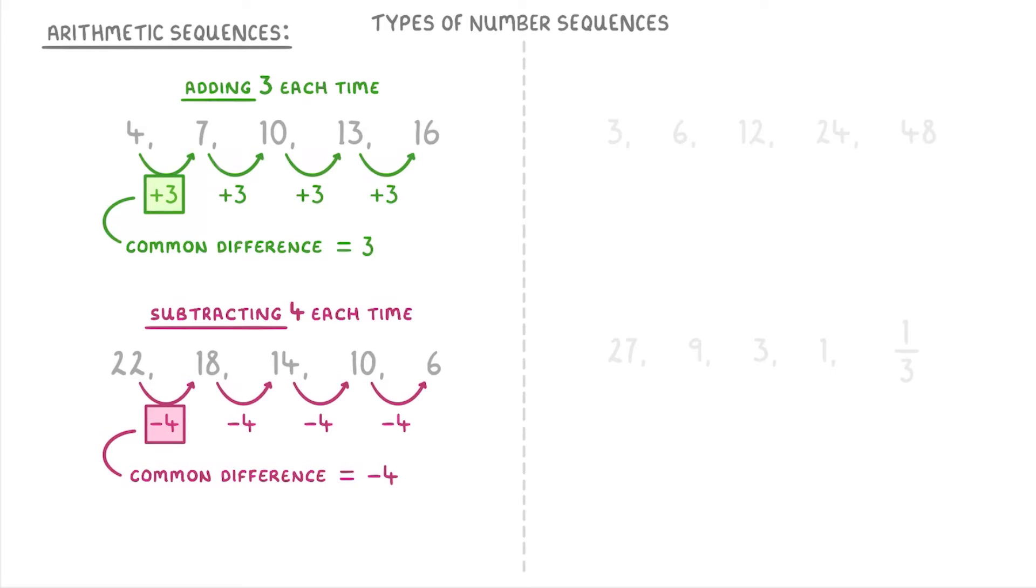Notice that instead of saying that 4 is being subtracted each time, we normally say that the common difference of negative 4 is being added each time.